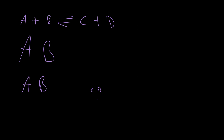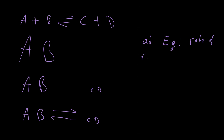As this goes on we reach what is known as equilibrium - and that is not when we have an equal amount of A, B, C, and D. What equilibrium means is that the rate of the forward reaction is equal to the rate of the backward reaction. At equilibrium: rate of reaction forward = rate of reaction backwards.